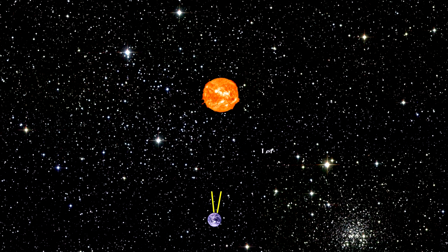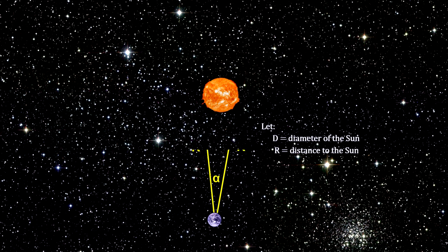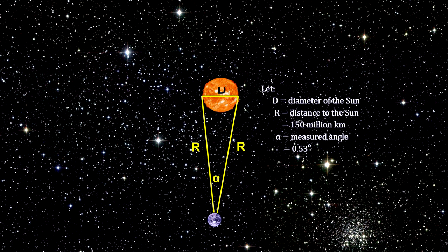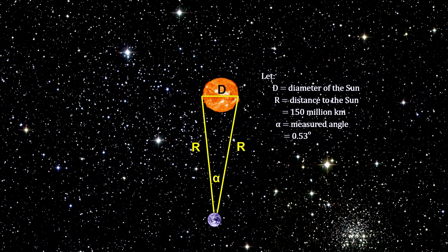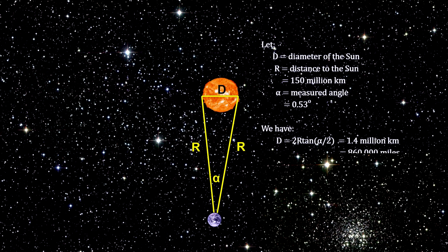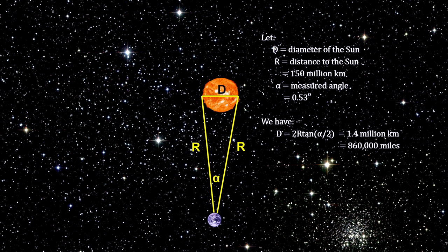Once the distance between the Earth and Sun is known, one can calculate a number of other parameters. We know that the Sun subtends an angle of just about one-half degree. As we did with the Moon, we can calculate the diameter of the Sun, at 1.4 million kilometers, or 860,000 miles.